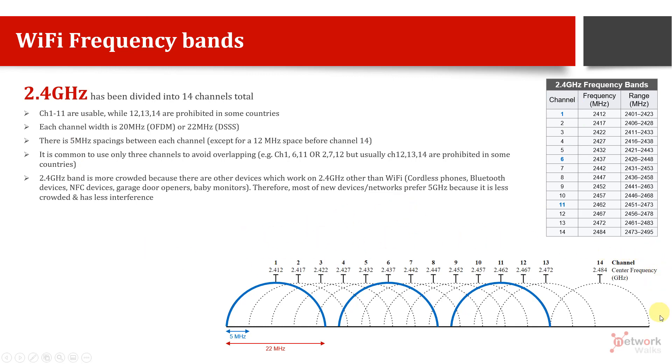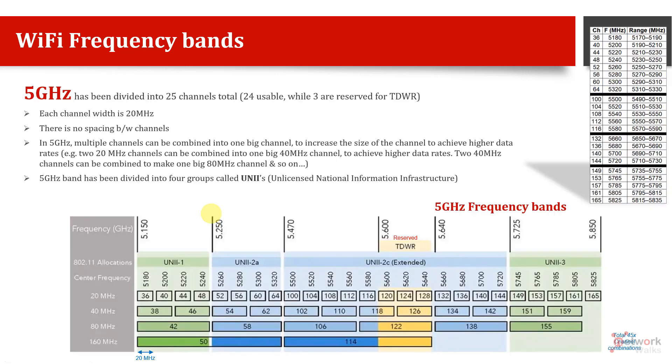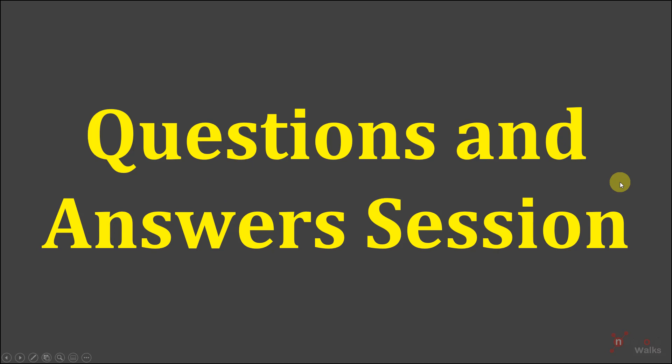So this is all about 2.4 gigahertz. If you have any question, I hope it's clear about frequency bands, about channel spacing, about co-channel interference, about central frequency, about the range of each channel and some more important interview points and how many bands we can use separately. Then in next videos, we will discuss about other frequency bands like 5 gigahertz. So now this is question and answers time.